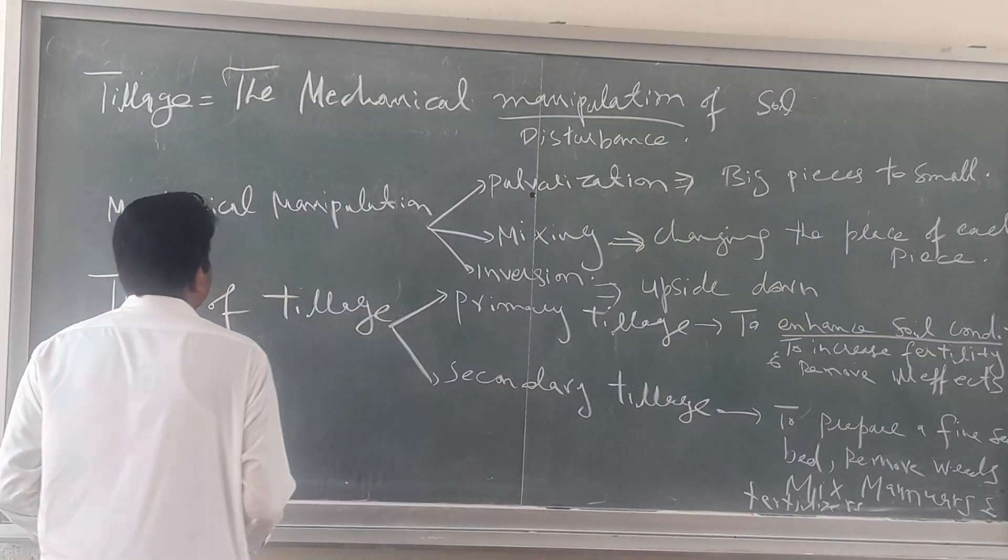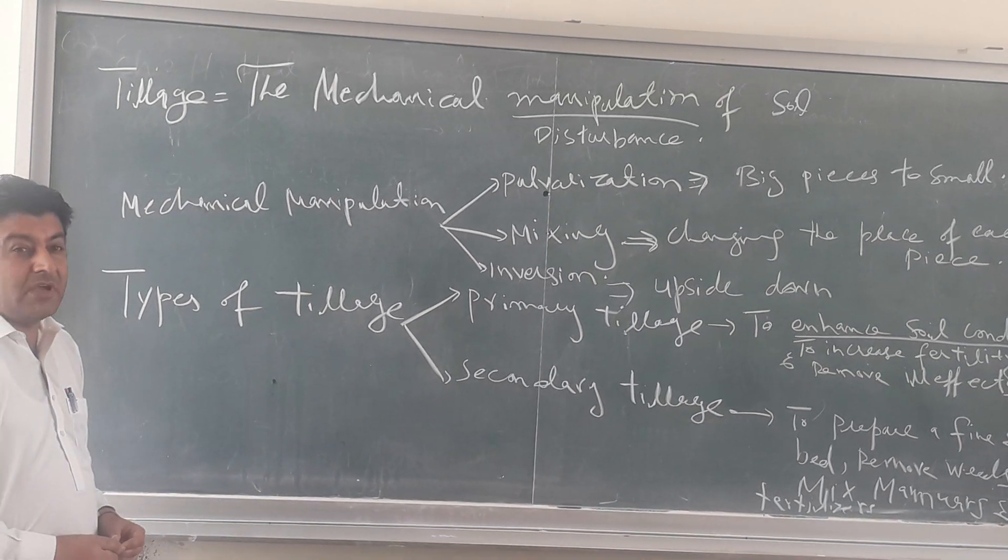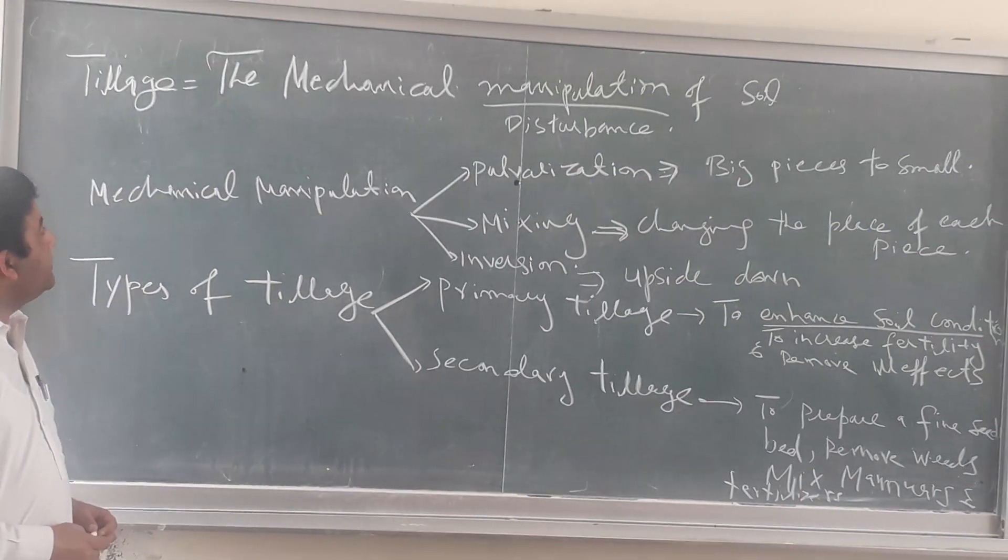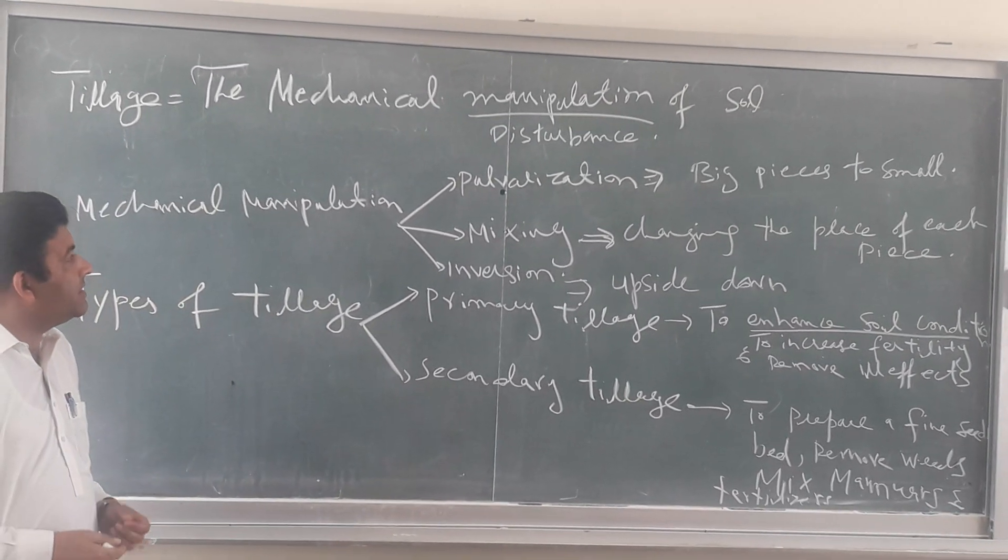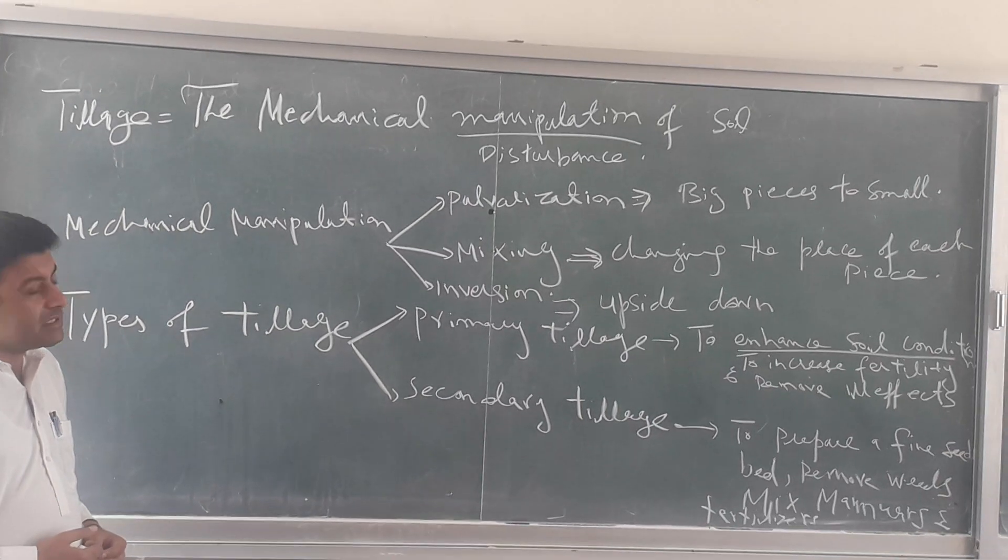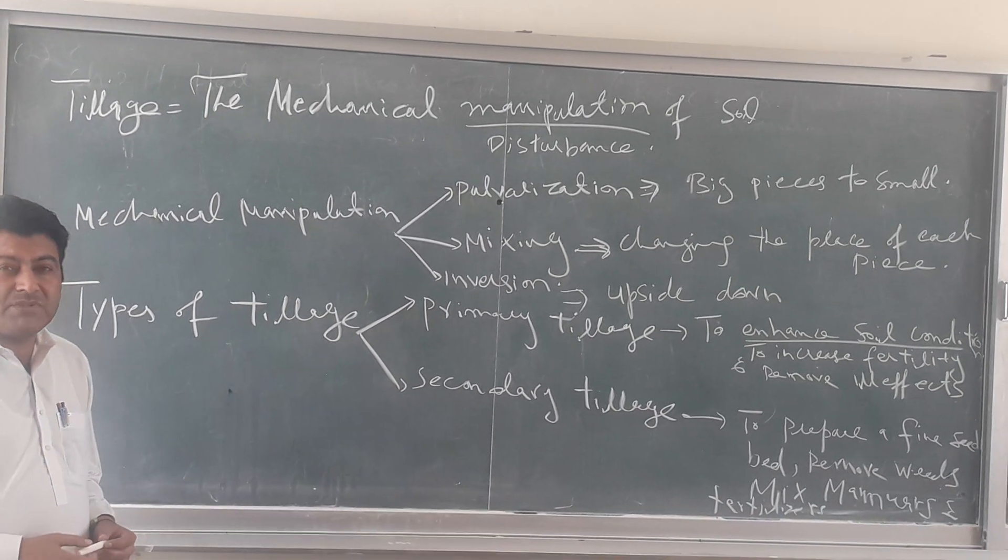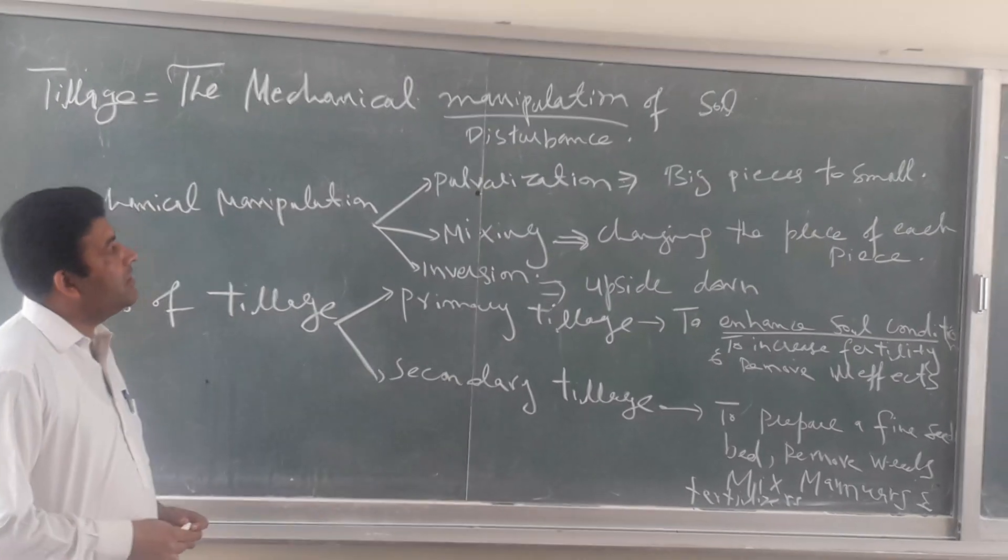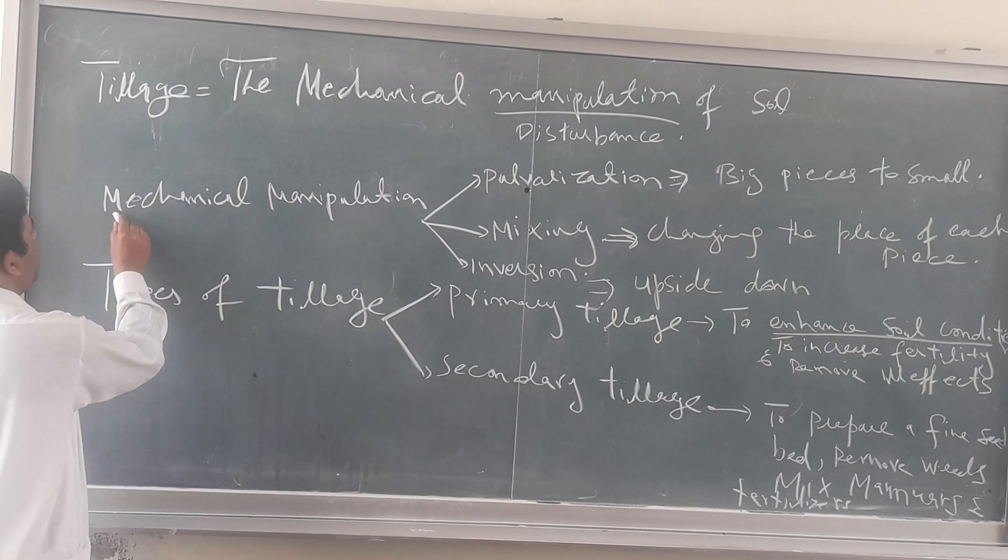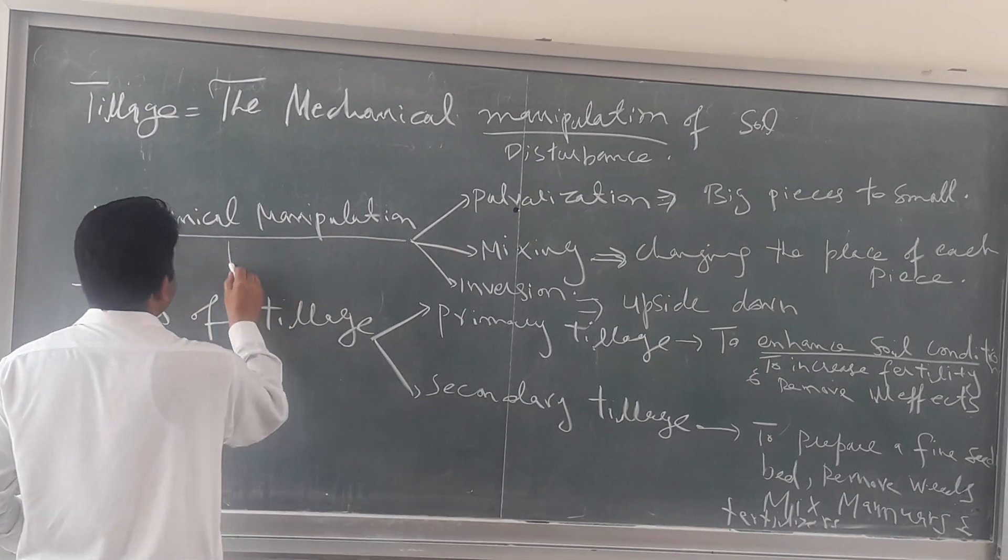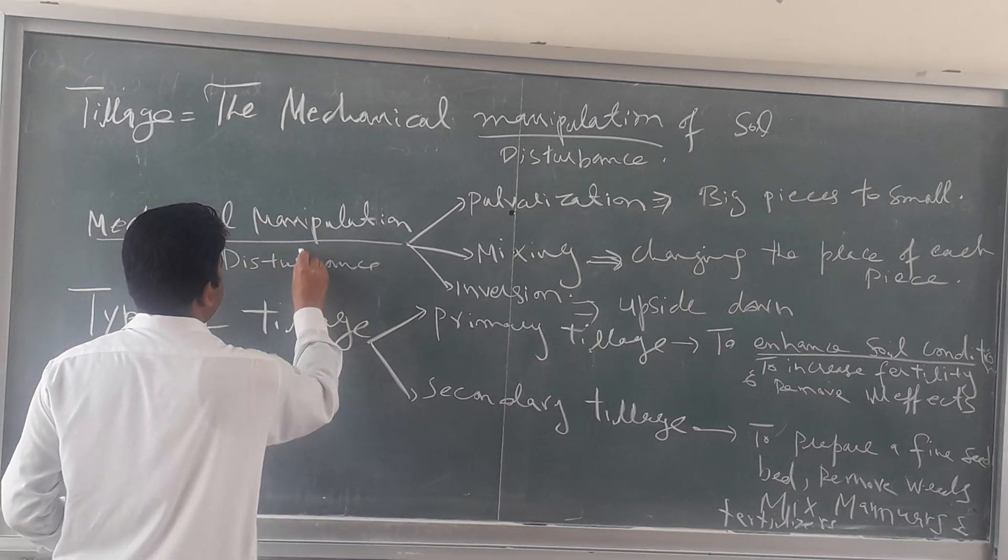Tillage. What is tillage? So tillage is actually the mechanical manipulation of soil, or we can also say that tillage is the mechanical disturbance of soil. When we mechanically disturb the soil, so this is called tillage. So for this purpose we use different tools to disturb the soil or manipulate the soil. What is mechanical manipulation or mechanical disturbance?